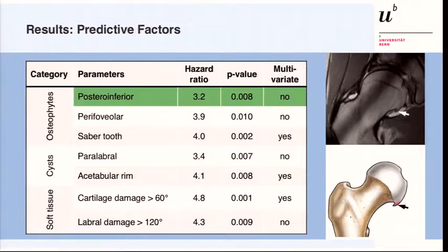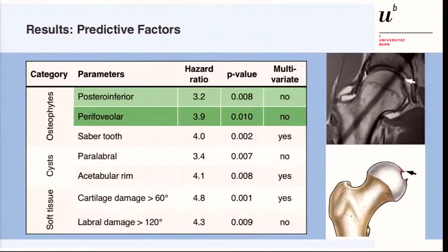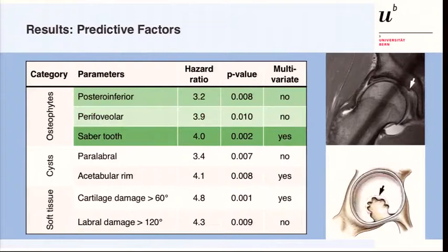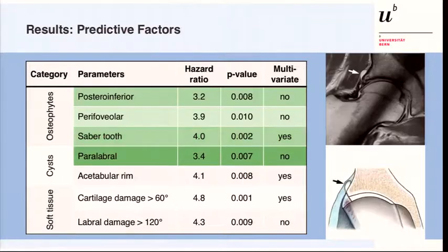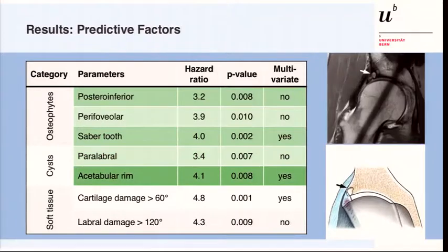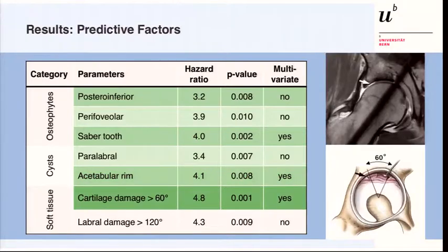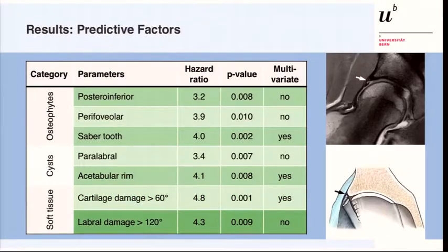Here are the factors that significantly predict a poor outcome. For osteophytes: the posterior inferior osteophyte, the perifoveal osteophyte, and the central saber-toothed osteophyte were multivariate predictors. For cysts: the paralabral cyst and the acetabular rim cyst were negative predictors. We also identified a cartilage damage sector of more than 60 degrees and labral damage spreading more than 120 degrees as negative predictors.